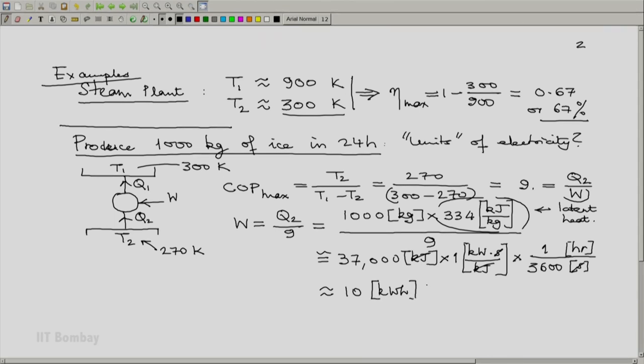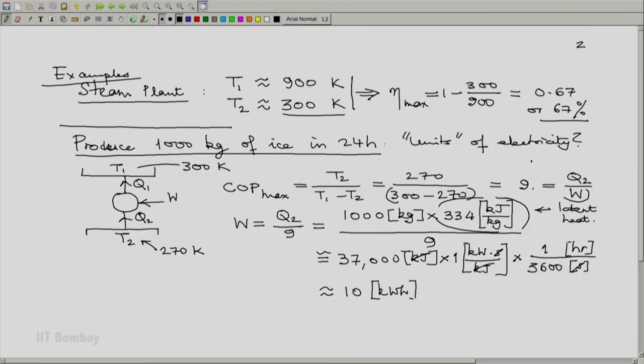Now, that means at least 10 units of electricity will be needed to produce 1 ton of ice in one day. Of course, the actual amount of electricity needed will be more than this because first this is an approximate calculation. Second, this is the maximum COP that we expect. Actual COP will be much less than 9 and of course, we have assumed that water is available at 0 degree C. If it is available at anything higher than that, a higher amount of energy will be needed. So this type of back of the envelope calculations is something we can very easily do after whatever we have studied so far.